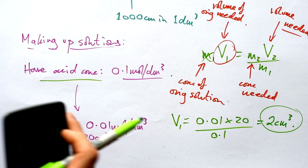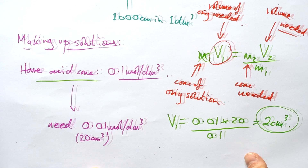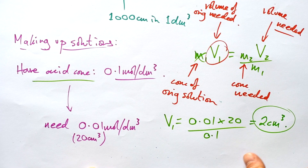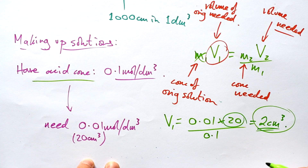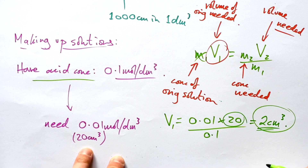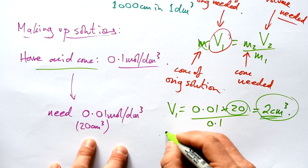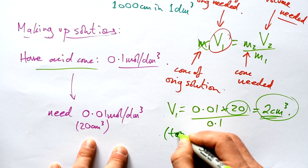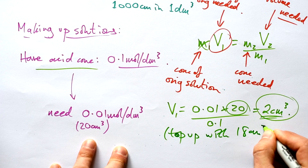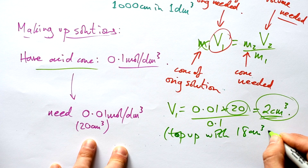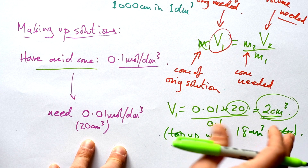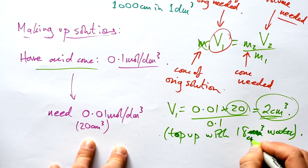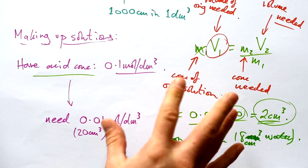We need 2 cm³ of the original 0.1 molar acid, but we want an overall final volume of 20 cm³. So we need to top up with — or dilute using — 18 cm³ of water in order to make it up to 20 cm³.